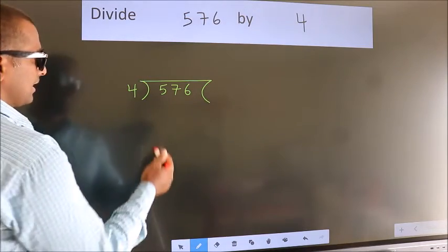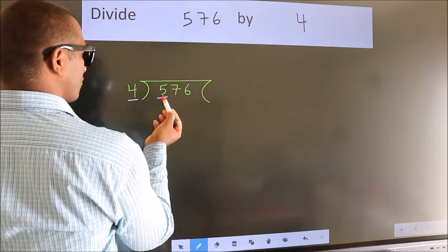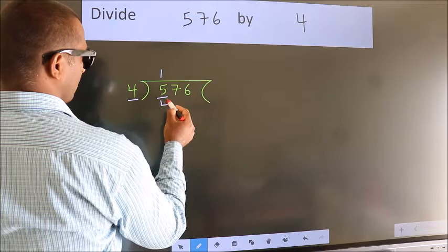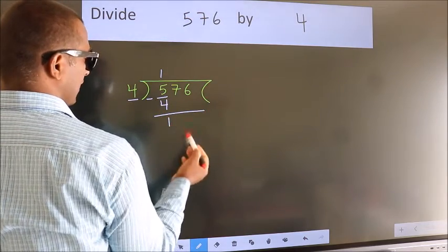Next. Here we have 5, here 4. A number close to 5 in the 4 times table is 4 once, which is 4. Now we should subtract. We get 1.